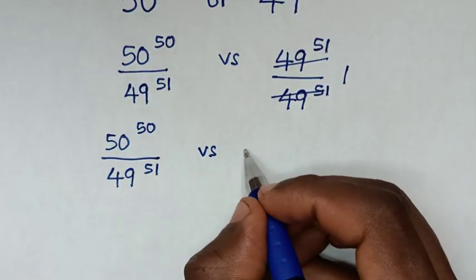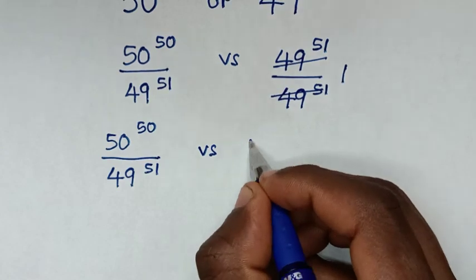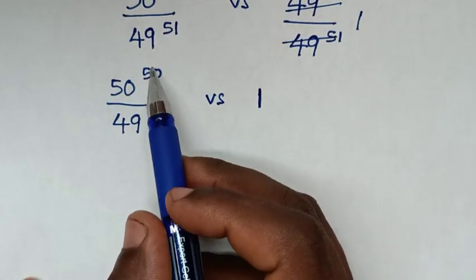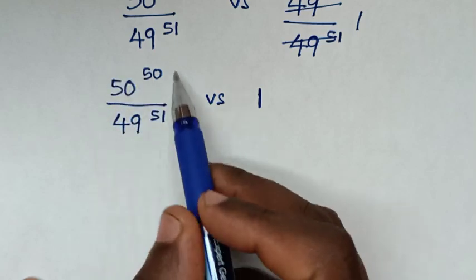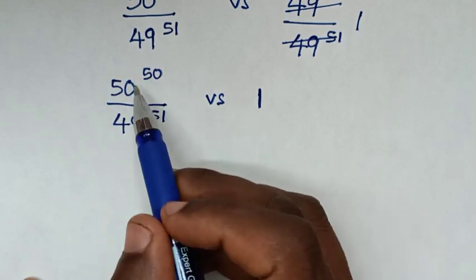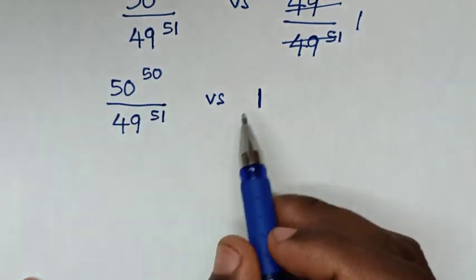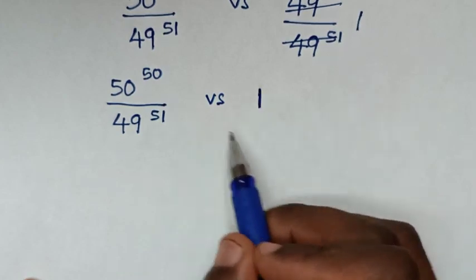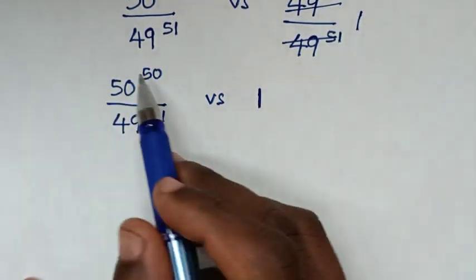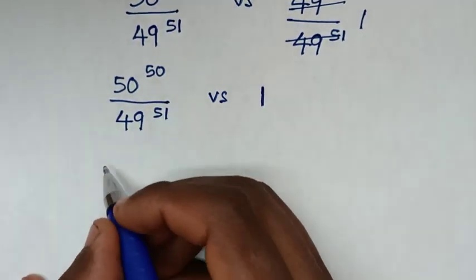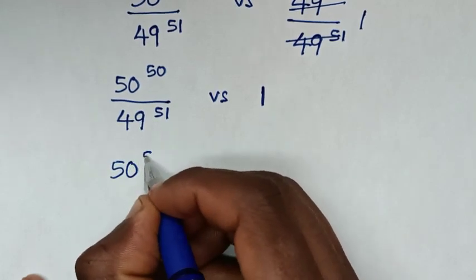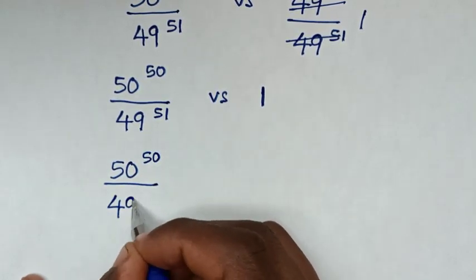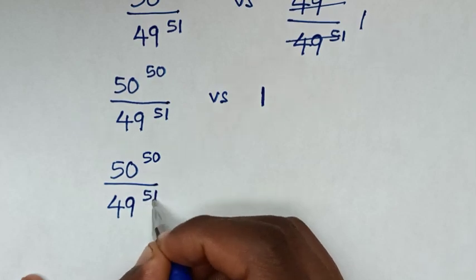Therefore we will compare with 1. In the next step, from this division of exponents we compare with 1 — it will be less than or greater than 1. From here it is 50 power 50 over 49 power 51.